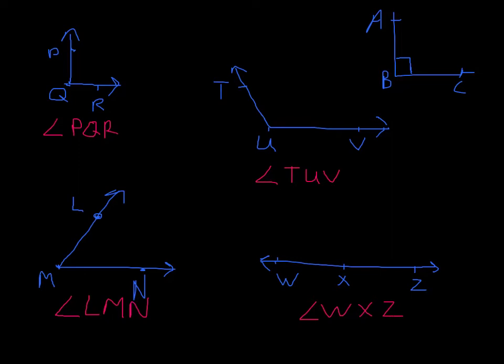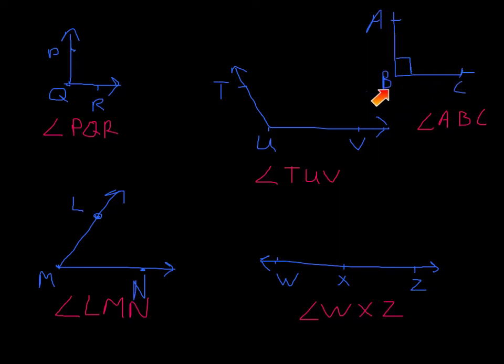We have one more angle up top: angle ABC. We can tell ABC is a right angle because it has the square drawn on it, just like the earlier example. That square tells us it is a right angle. Sometimes it's hard to draw a perfect square on a whiteboard, so we just put the square in there to indicate it is supposed to be a right angle.